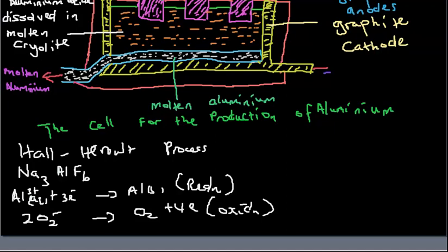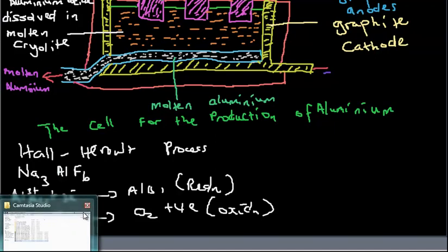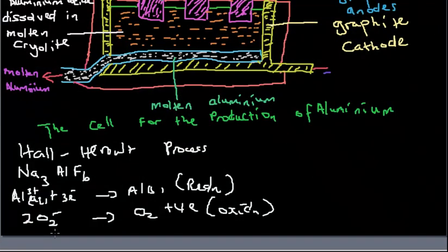The oxygen reacts with the carbon graphite anode to produce carbon dioxide. The oxygen being produced reacts with carbon dioxide, so we have the production of CO₂ gas at the graphite anodes.